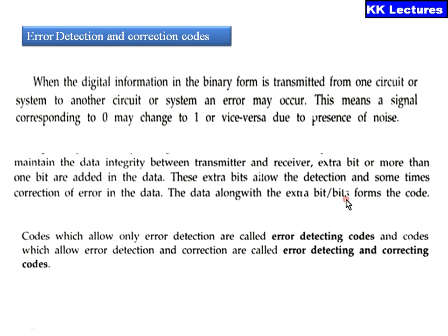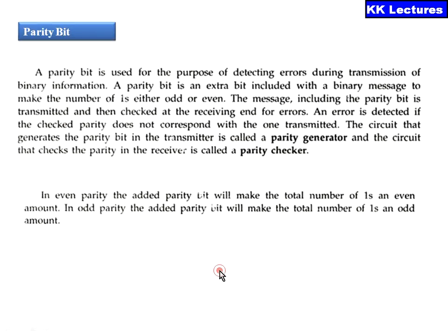The data along with the extra bit or bits forms a code. We are forming an error detection code by adding some information bits. These information bits are useful in correcting the error at the receiving end. Codes which allow only error detection are called error detection codes, and codes which allow error detection and correction are called error correction codes. The bits we are adding are called parity bits.